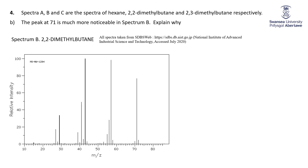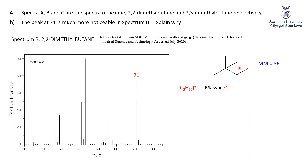So now we're moving to spectrum B of 2,2-dimethylbutane, and we're looking at the peak of 71. Now remember what we said: 71 is C5H11. In other words, what we've done is we've removed 15 from the main peak, and 15 is, of course, a CH3. So a CH3 is being lost. Now we could lose a CH3 if we break it there — or the equivalent, breaking it there. What we're left with is the plus charge on a tertiary carbon. So that's a tertiary carbocation, which is very, very stable.